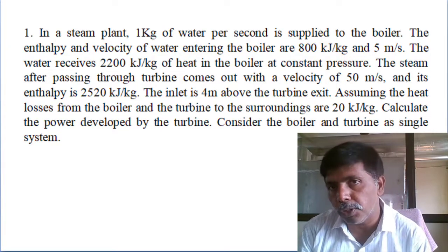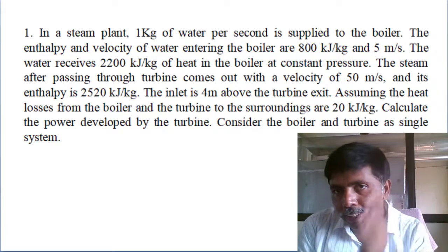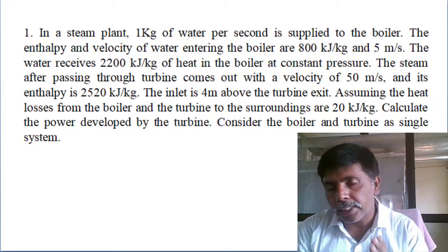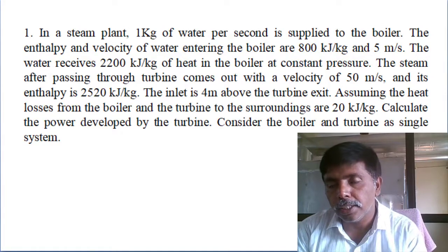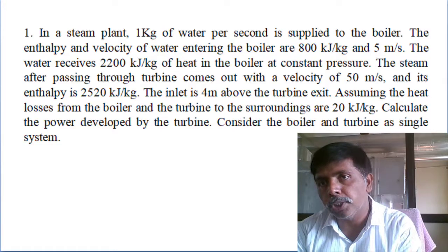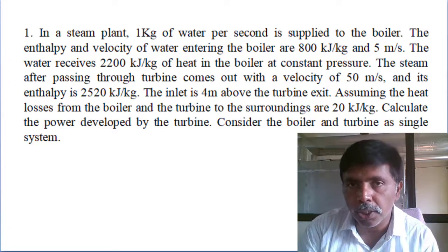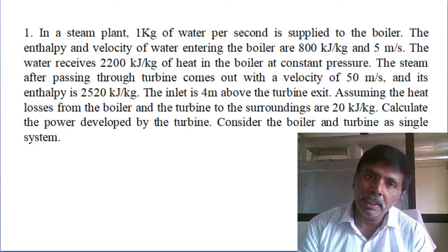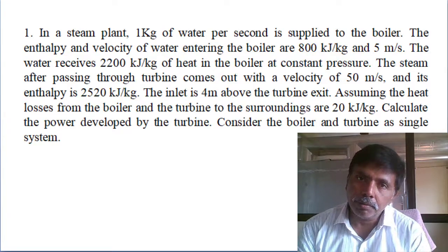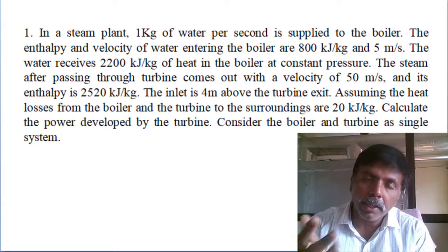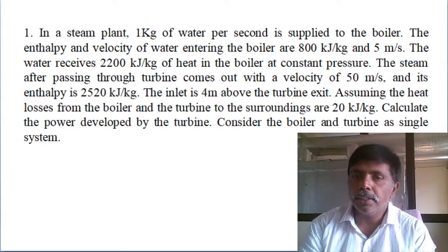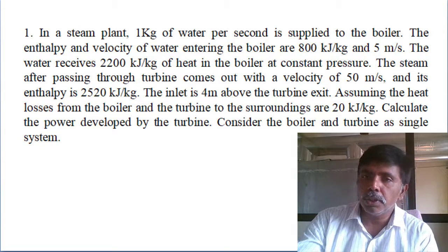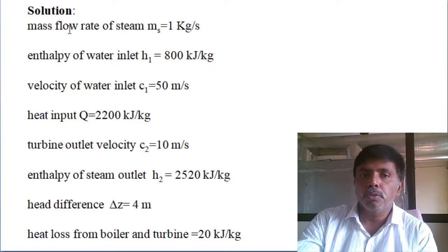If that assumption were not given, we would first calculate the boiler exit conditions, then use the same as turbine inlet conditions, and then calculate the total work done. But here they have considered the boiler and turbine as a single unit directly. So note down the given data: mass flow rate of steam is 1 kg per second.